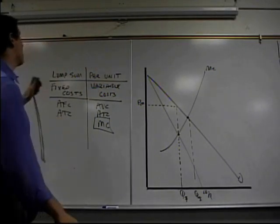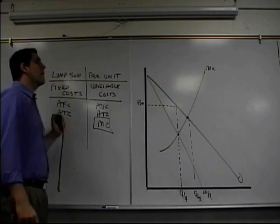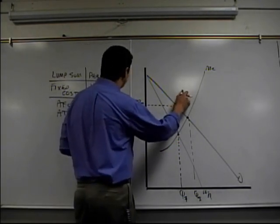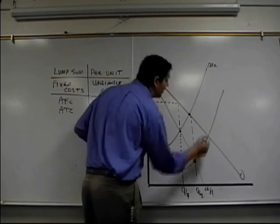The question is, do you put a lump sum or a per unit subsidy to get the Monopoly to produce what you want? A per unit subsidy. A per unit subsidy would shift marginal cost and decrease it right down to here.